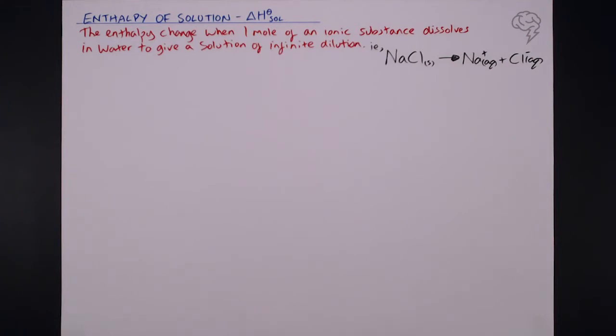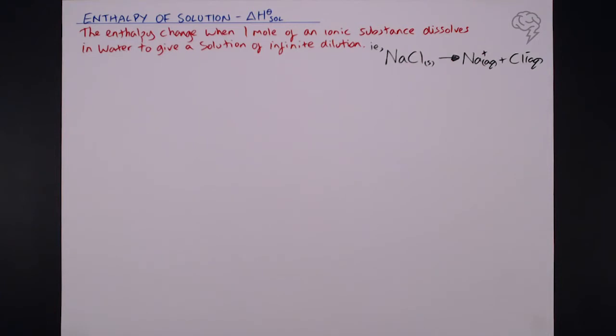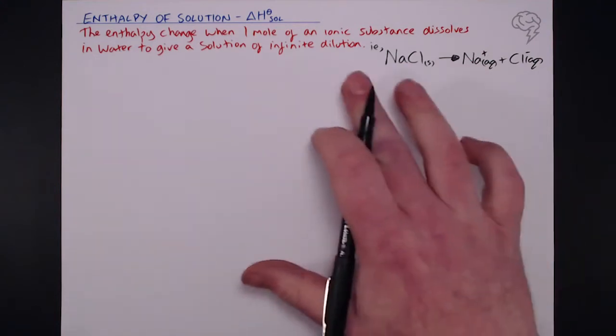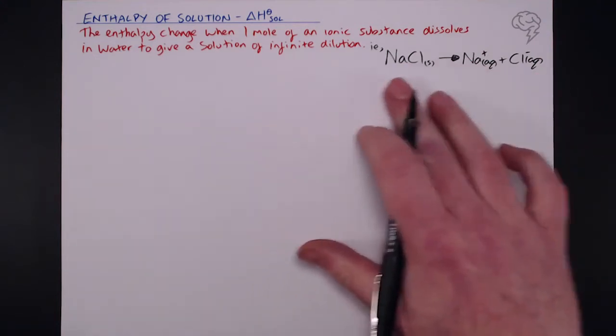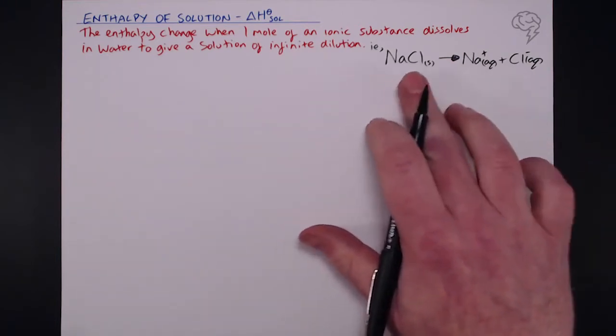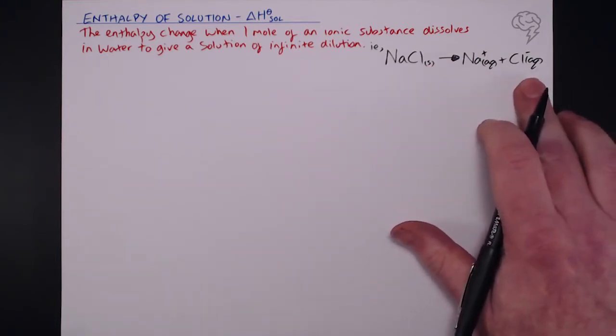So you can apply that to any salt. Just be careful with your balancing. If you've got like two metals or two non-metal atoms, then your balancing on the right hand side here needs to take that into account. So that's our equation for any salt when it dissolves. Delta H solution equation is solid salt to aqueous ions.